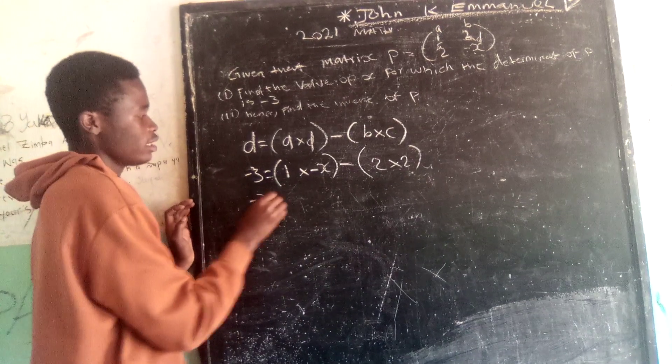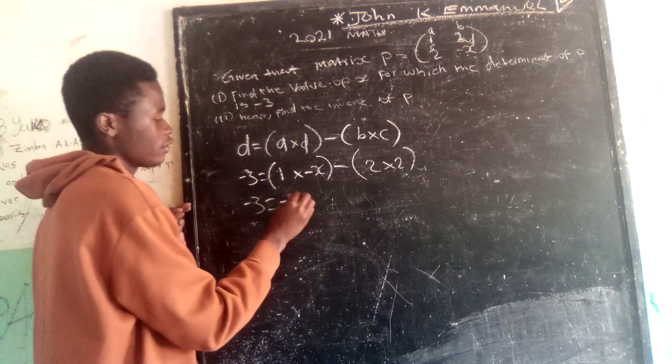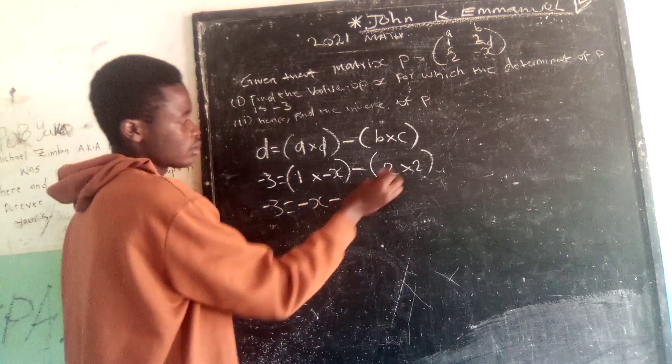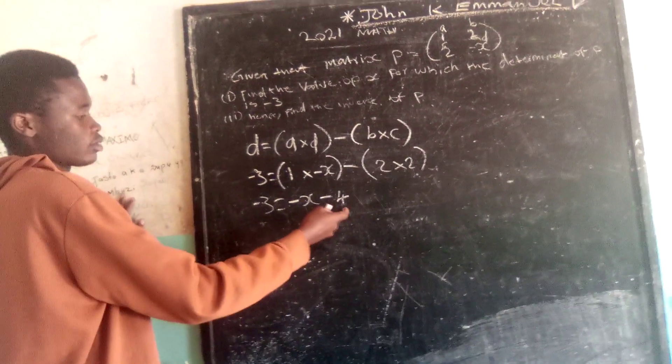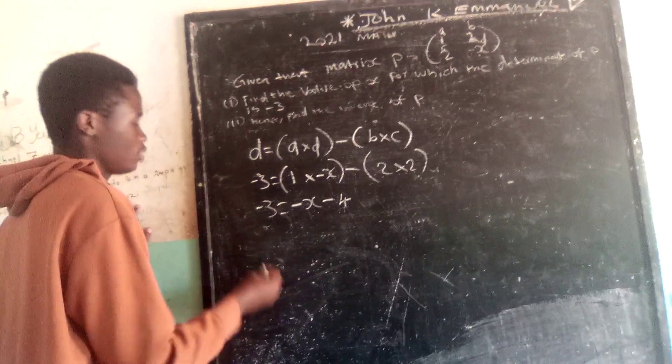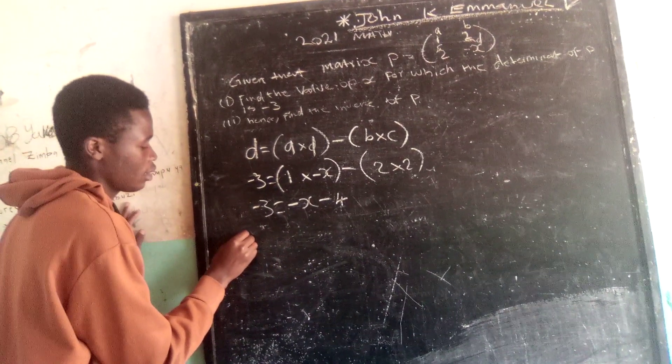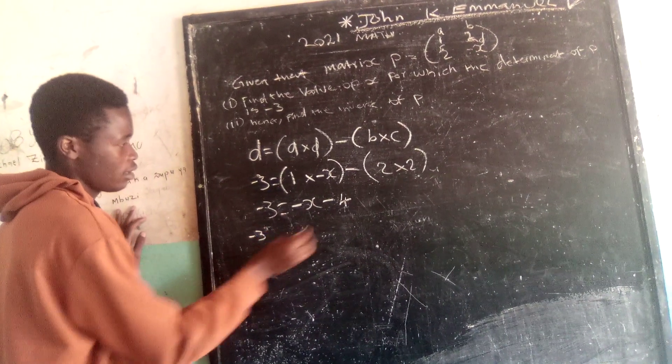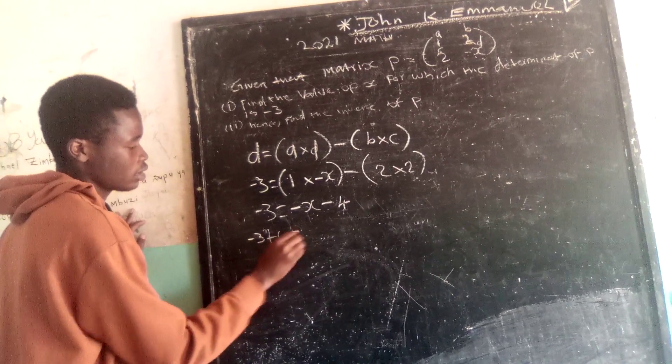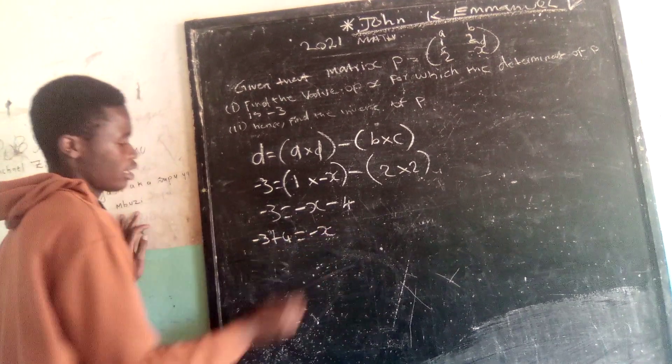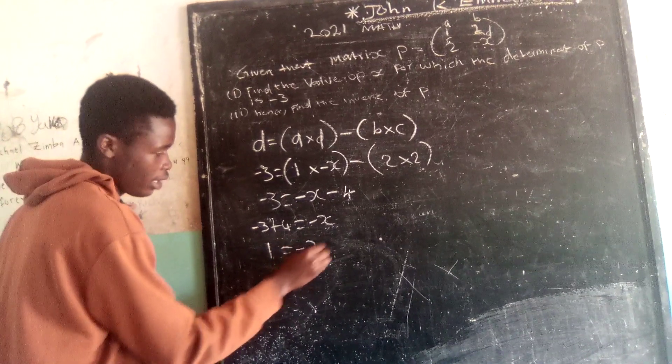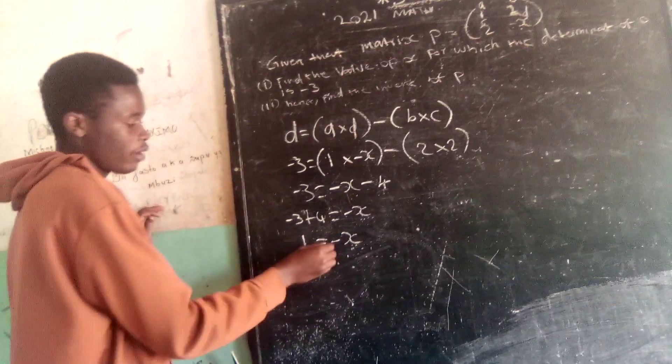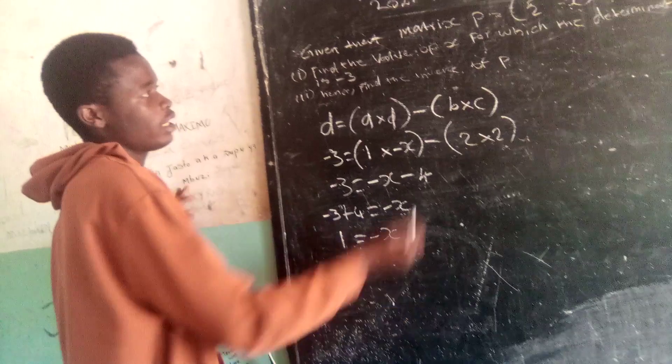Therefore, negative 3 is equal to negative X minus 2 times 2 is 4. So it is going to be like negative 3 plus 4 is equal to negative X. So here we have positive 1 is equal to negative X. But we want to find positive X.